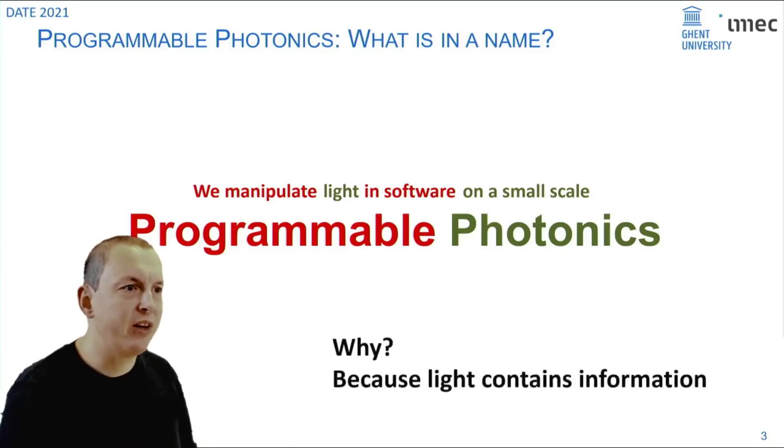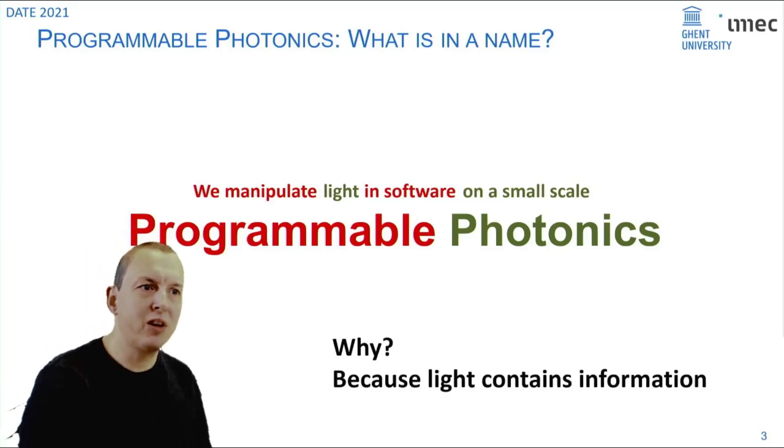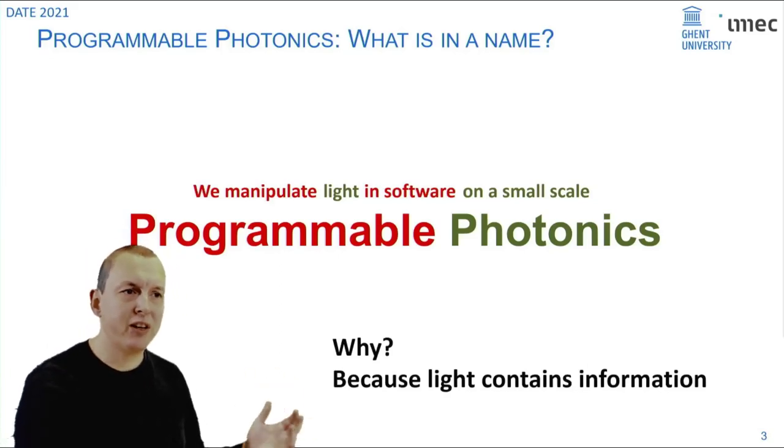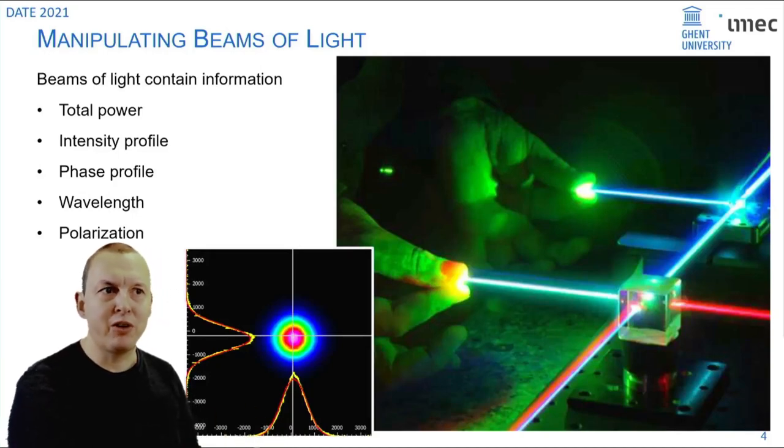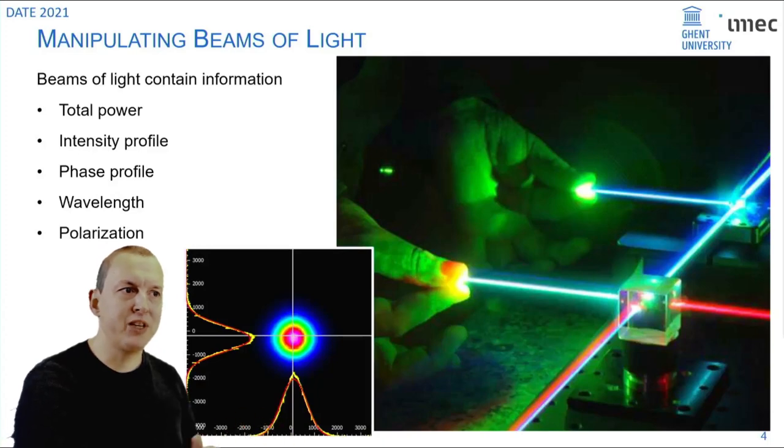Now where does that take us? Why do we want to use this? Well because light contains information and we can do things with that. If you take a beam of light you can encode information in the total power and how you modulate that power over time, but there's also a spatial intensity profile, a phase profile, wavelength, polarization, etc.